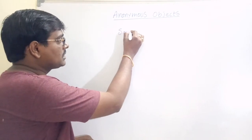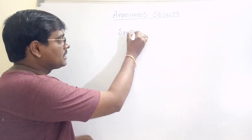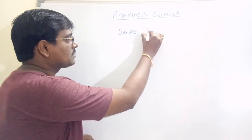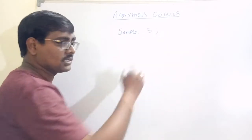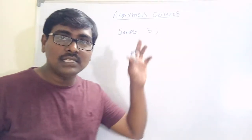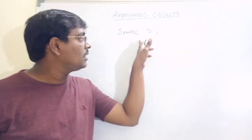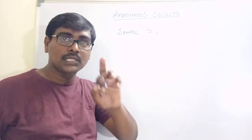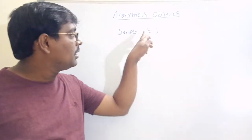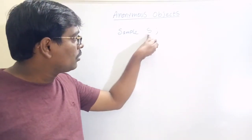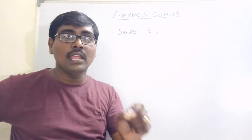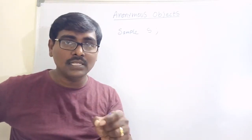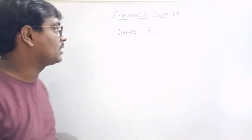For example, Sample is the name of the class. We write: Sample space S. Here, S is an object. The name of the class is Sample. Observe carefully — S is the name of the object.